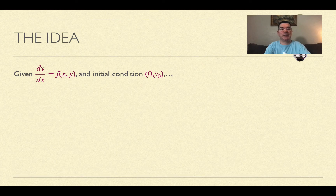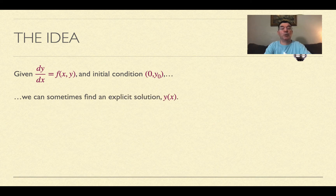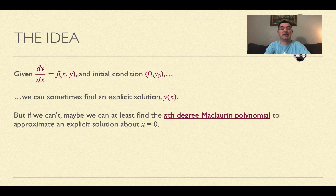Here's the idea. We have dy/dx expressed in terms of x and y, and we do have an initial condition — we'll call that x₀ and y₀. We can sometimes find an explicit solution written as y in terms of x, but if we can't, what we can do is find an nth degree Maclaurin polynomial that will approximate an explicit solution around x equals zero.